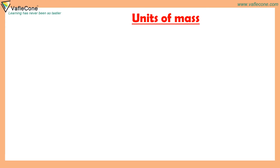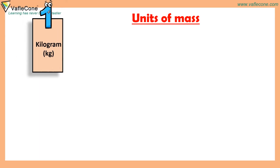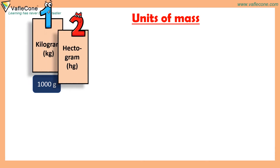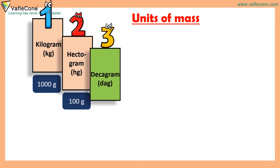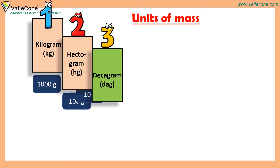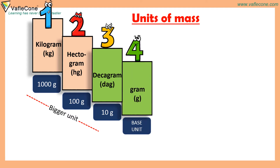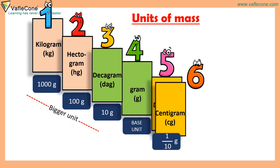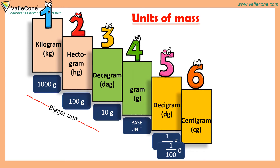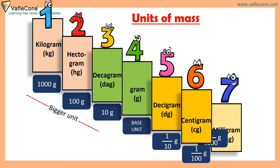Units of mass. 1 kilogram is equal to 1000 grams, 1 hectogram is equal to 100 grams, 1 decagram is equal to 10 grams. These are bigger units. Gram is the base unit. 1 decigram is equal to 1 tenth of a gram, 1 centigram is equal to 1 hundredth of a gram, 1 milligram is equal to 1 thousandth of a gram.